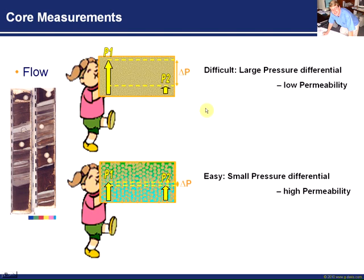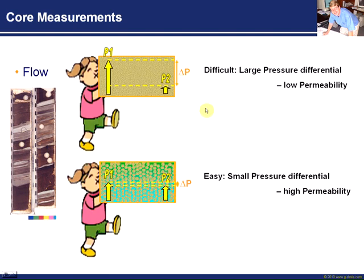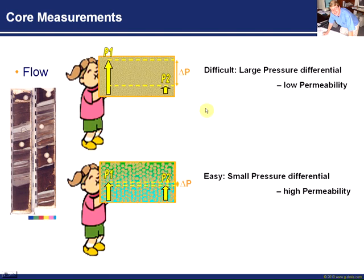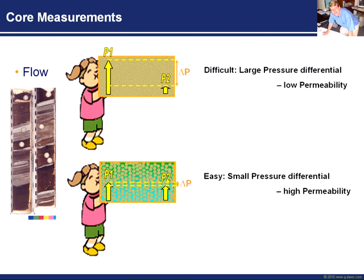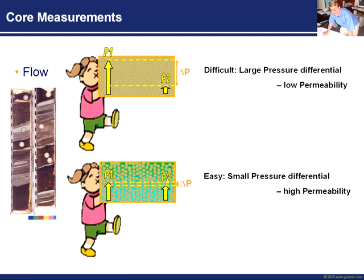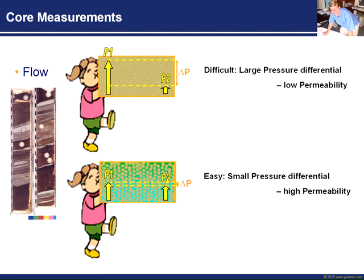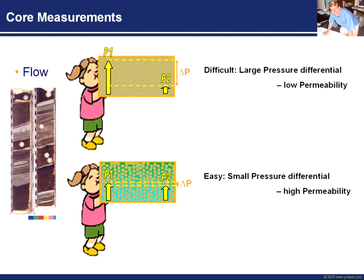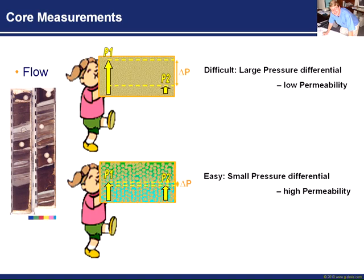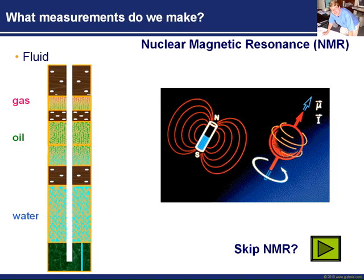Now, that's a direct measurement, and as I've already said, it's quite difficult to get core everywhere, so a lot of our time is spent trying to find predictors of permeability from other measurements. And one of the other measurements that I'd like to talk about now, potentially, is the NMR measurement, which is often very good at providing estimates of permeability.